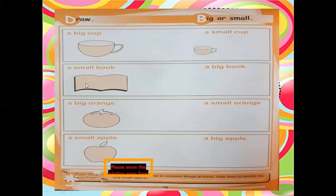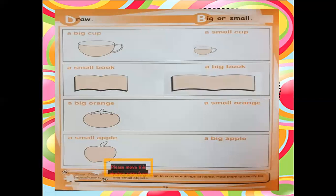In the second exercise, a small book is shown but you will draw a big book here - a book that is bigger than the first one. Draw a big book. Now compare this book and this book - this book is bigger than this one. So we have done this exercise.